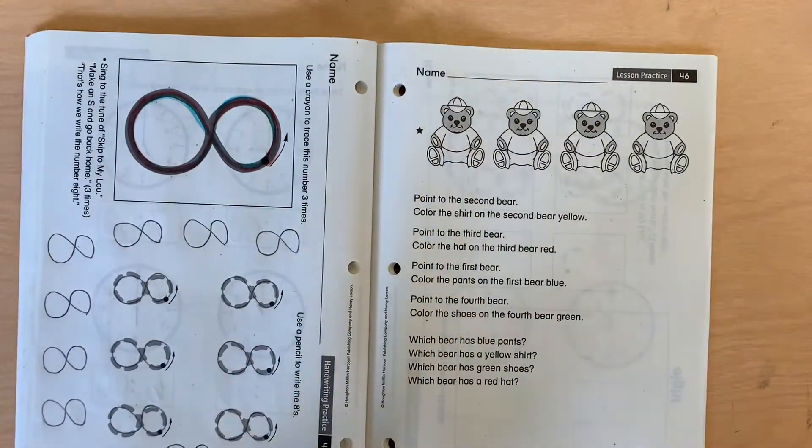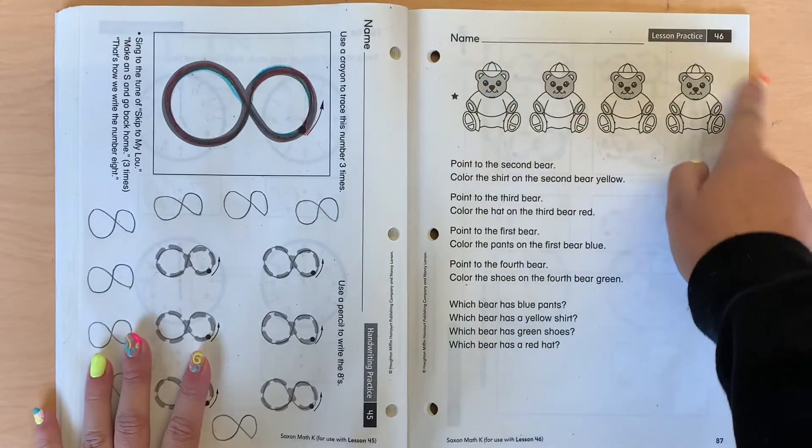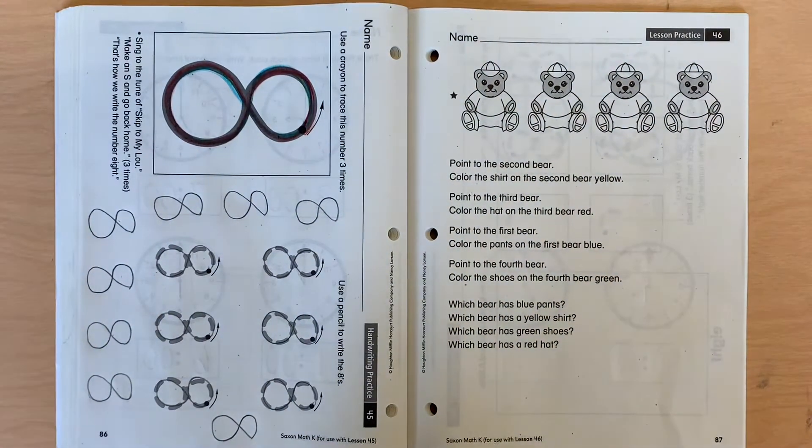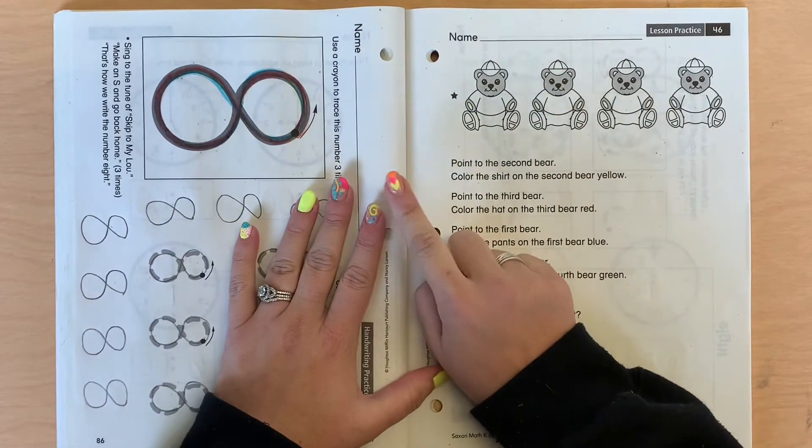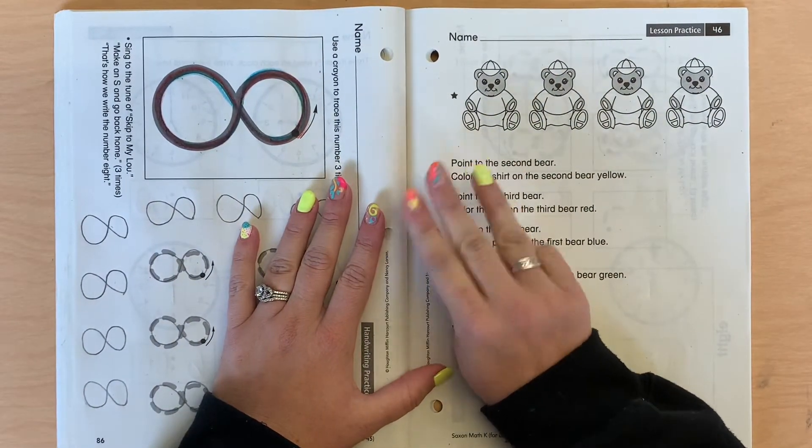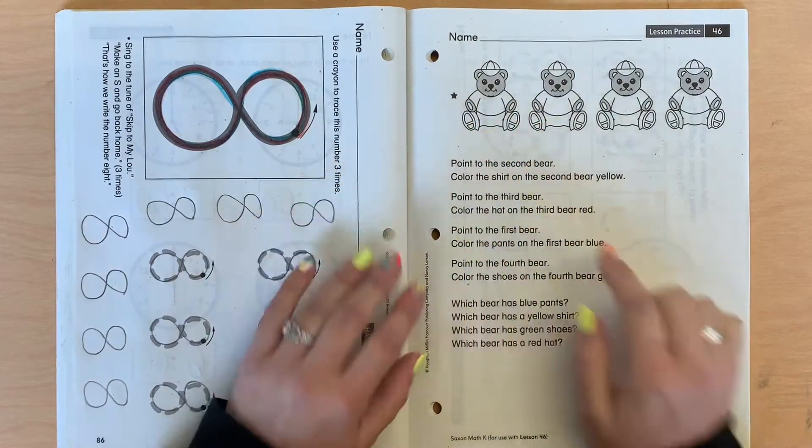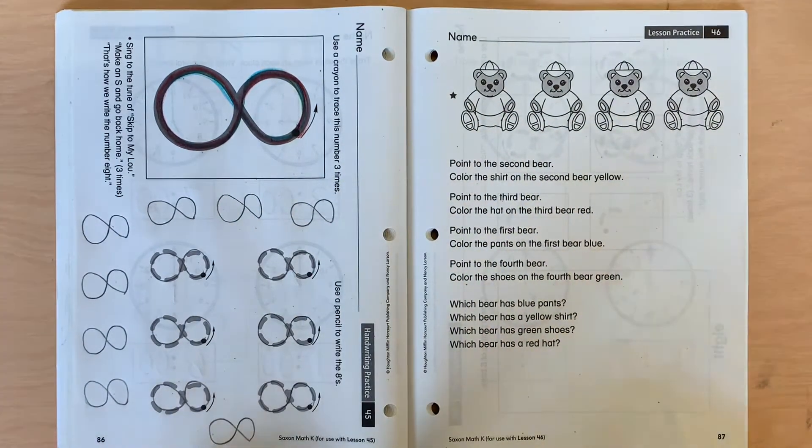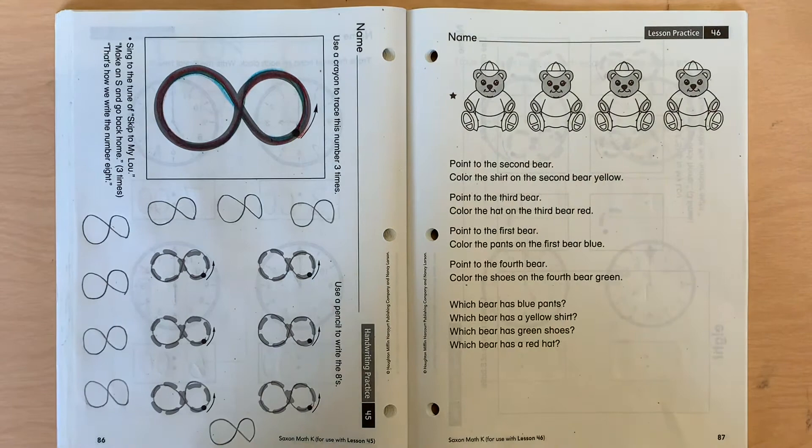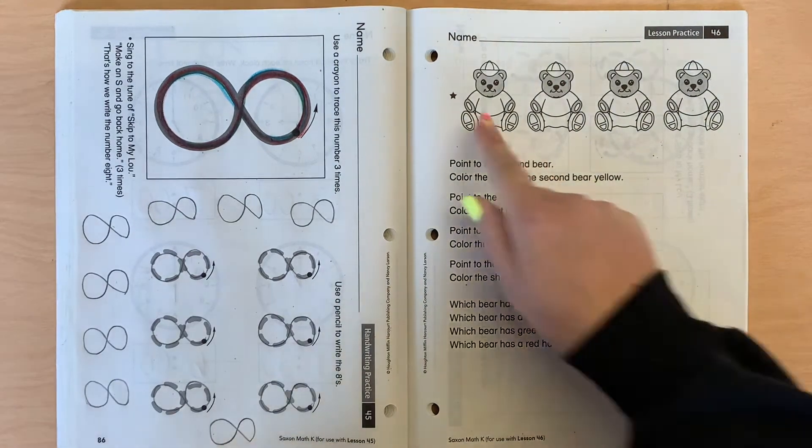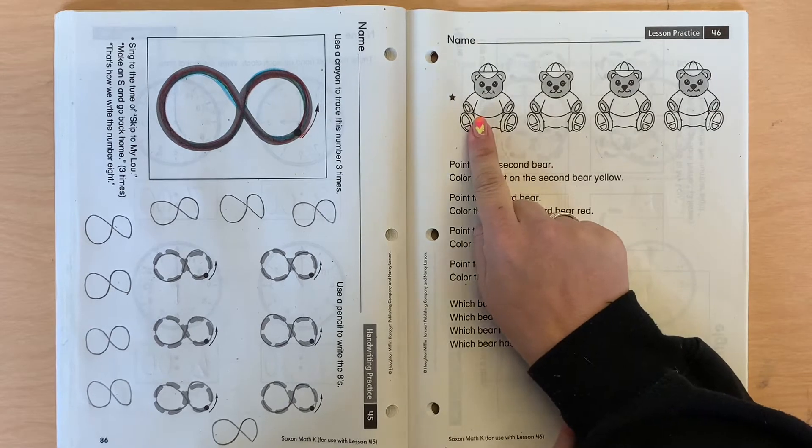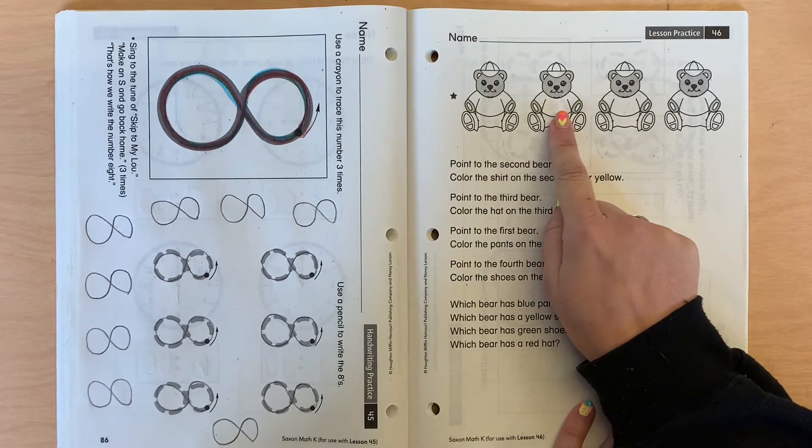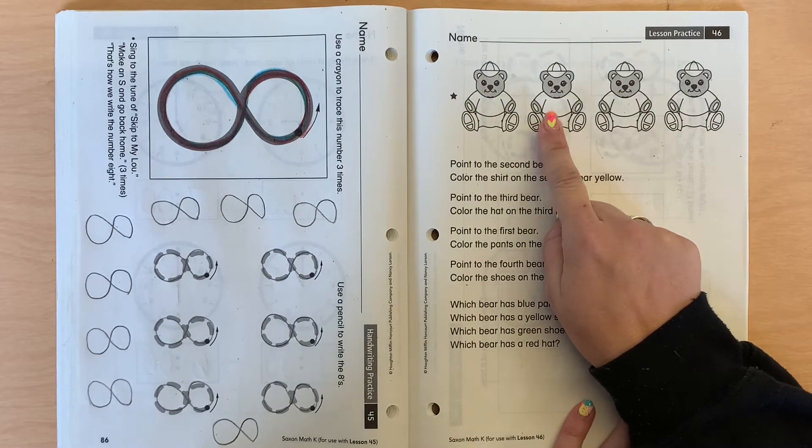All right. So we're opening up to the page that has the bears at the top. Okay. So we're going to practice our ordinal numbers. Do you remember ordinal numbers? First, second, third, fourth, fifth. All right. So ready to be a good listener? It says, point to the second bear. First, second. Color the shirt on the second bear yellow.